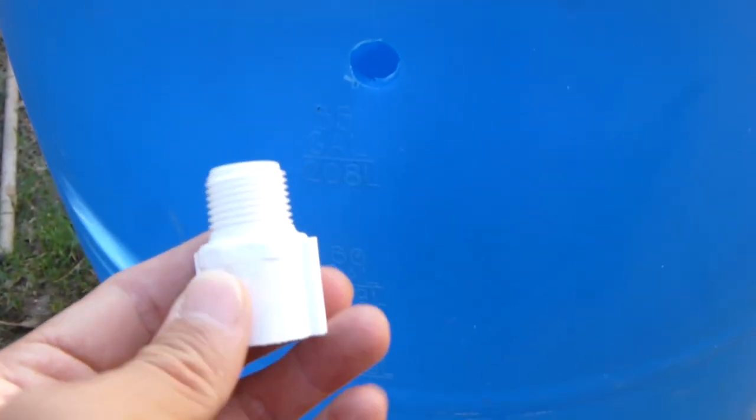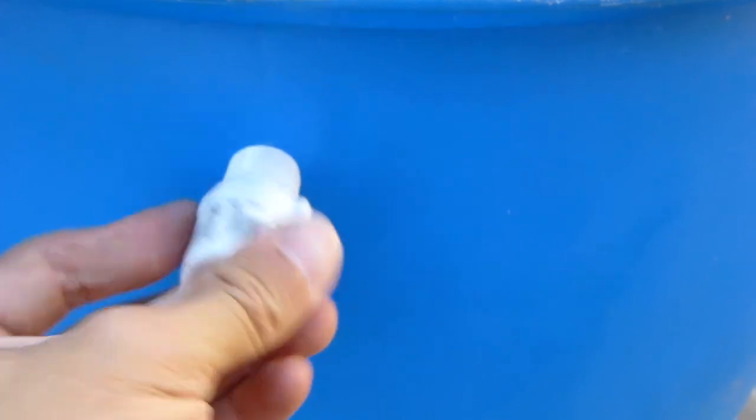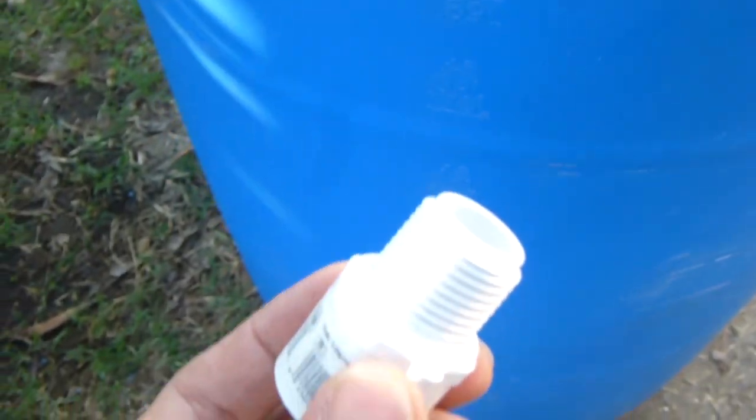Alright, this is the tricky part. Three quarters of an inch hole will not work with the half inch PVC stuff. Why? The hole is just a bit too small. And this is not a tap bit.